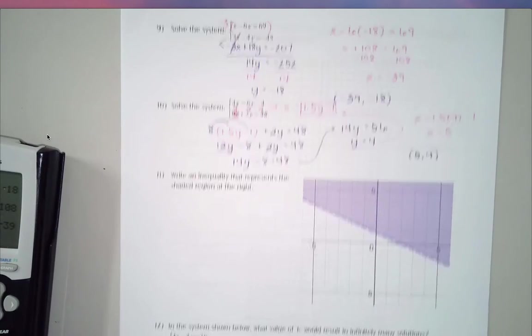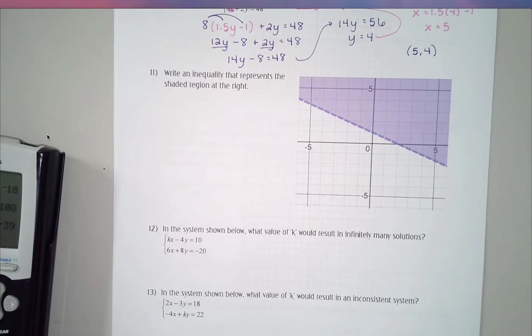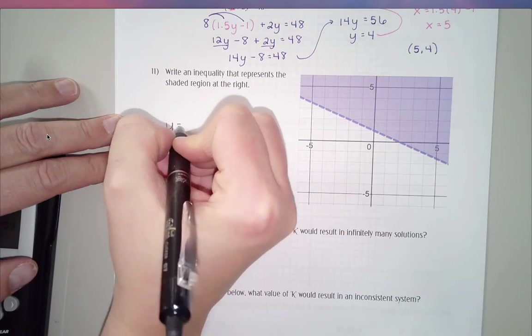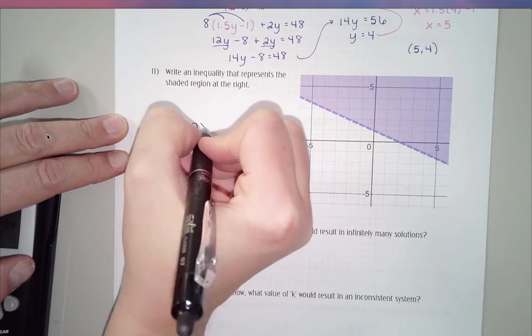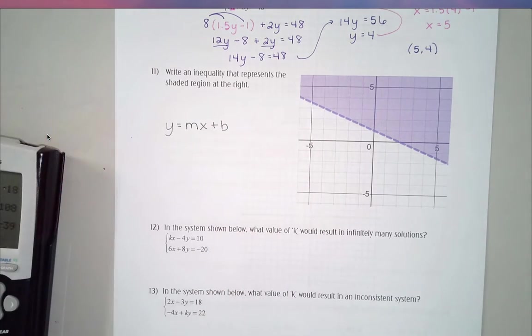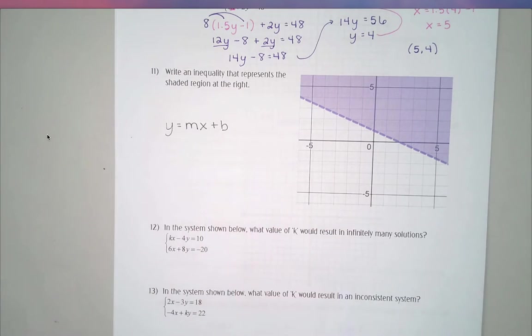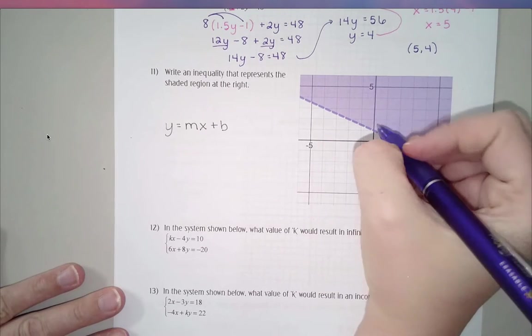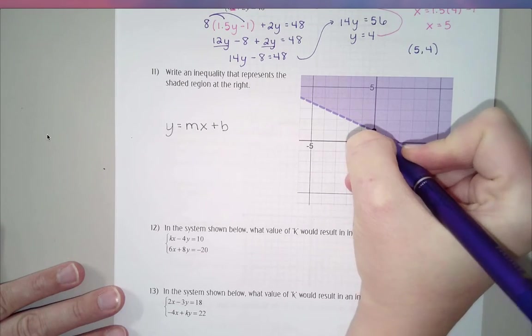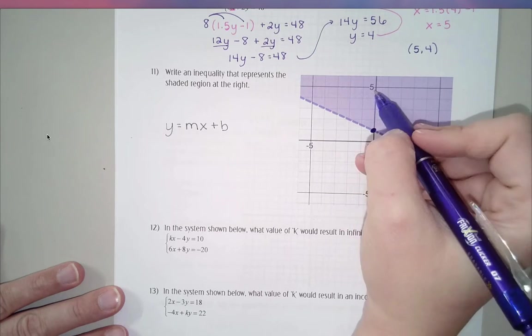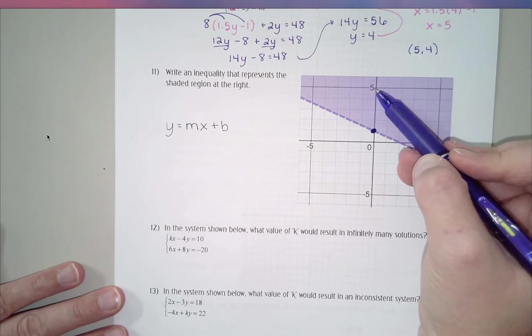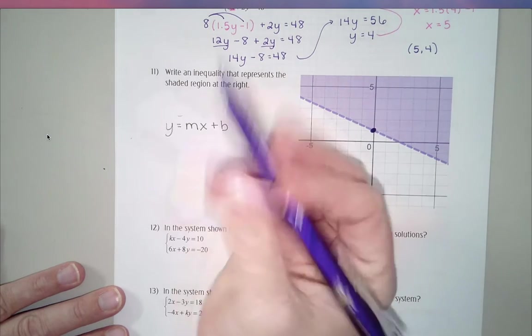Number 11, they're giving me a picture here and asking me to write an inequality. I always start these ones with this in mind, that this is what my product is going to look like: y equals mx plus b. This is what I want my answer to come out to be. And I usually start from the b, I think it's because it's the easiest to find. So the b value here is right here at 1.